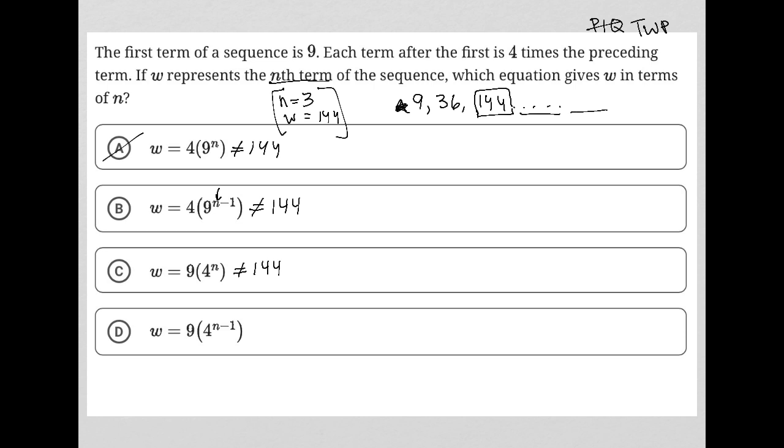How about choice D? When I replace n with a 3, I get 3 minus 1, which is 2. 4 squared is 16. 16 times 9 actually is 144.